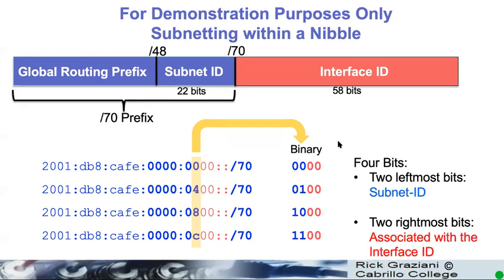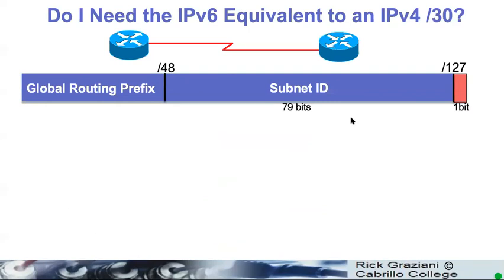It's not a hard pattern, but there's really very few times you even have to worry about doing this. So, why create more trouble for yourself? We have plenty of IPv6 address space. There should be seldom a need to do this. You should be fine with just subnetting on a nibble boundary.